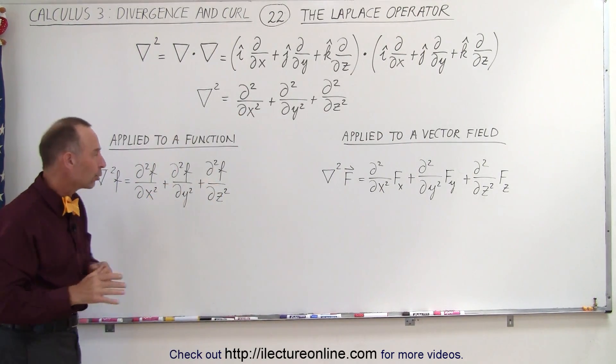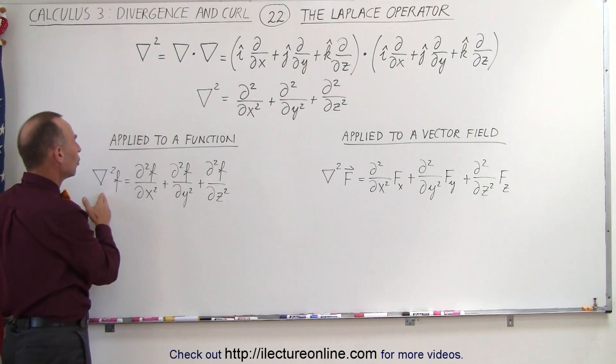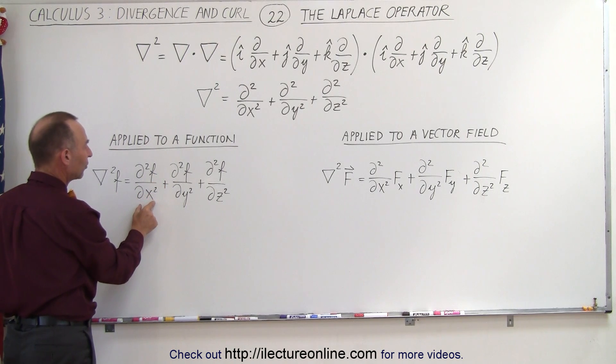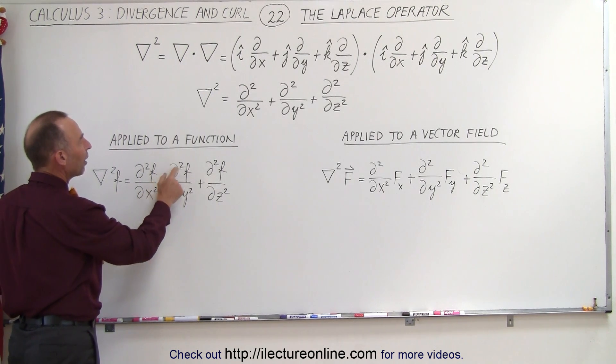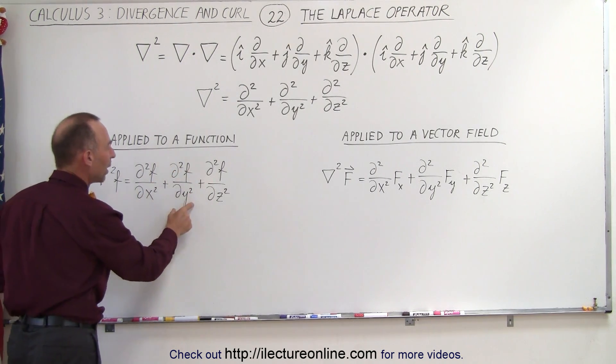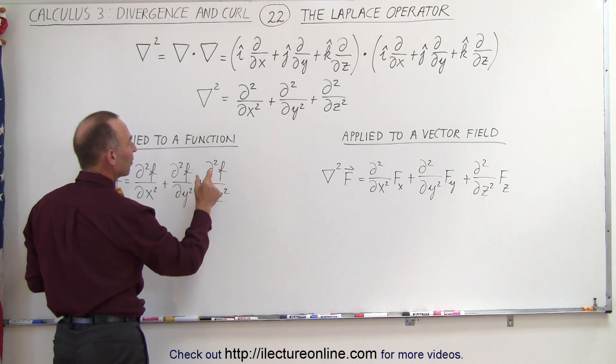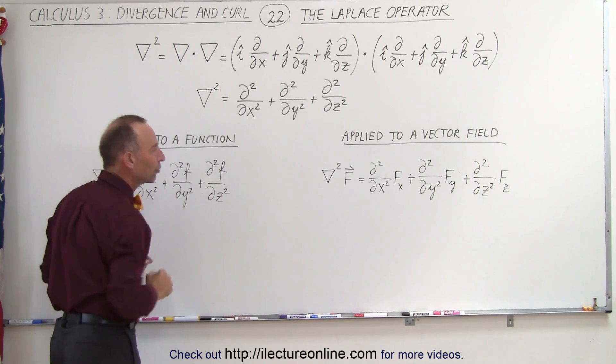If we apply it to a function, we take the partial second derivative of the entire function with respect to x, the partial second derivative of the entire function with respect to y, and the second partial derivative with respect to z, and add them all together.